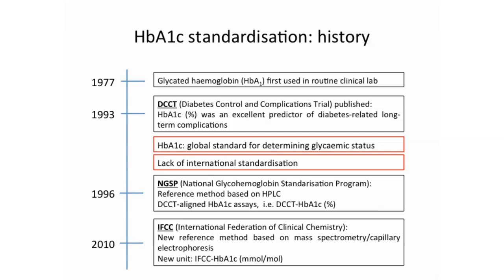Way back in 1977, glycated hemoglobin was first used in routine clinical labs, but they measured HbA1 rather than the sub-fraction A1c. Then in 1993, the landmark DCCT trial was published, showing that intensive control in type 1 diabetes resulted in lower risk of microvascular complications. Since the DCCT publication — where HbA1c was reported in percentage — HbA1c became the new global standard for determining glycemic status, as it reflects glycemia over two to three months and is not dependent on food intake at the time of the blood test.